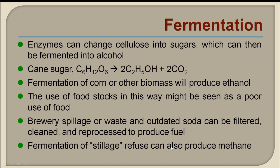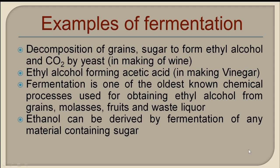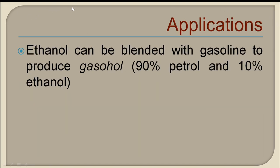Fermentation of stillage and refuse can also produce methane. Examples include decomposition of grains and sugar to form alcohol by yeast — especially in wine-making — and fermentation forming acetic acid in making vinegar. Fermentation is one of the oldest known chemical processes for obtaining ethyl alcohol from grains, molasses, fruits, and waste liquor. Ethanol can also be blended with gasoline to produce gasohol: 90% petrol and 10% ethanol, usable in internal combustion engines.